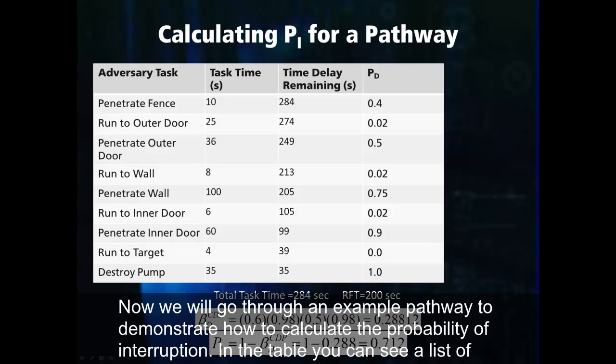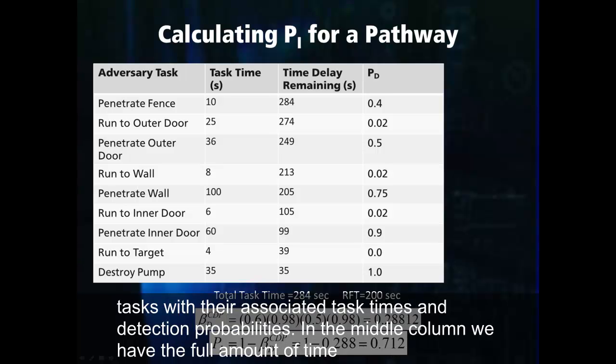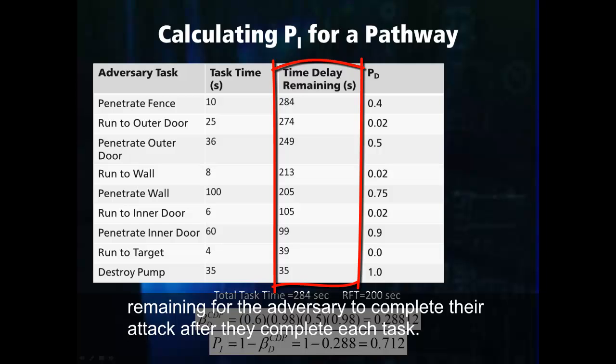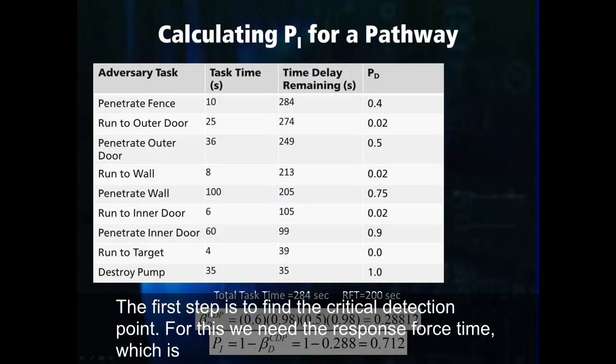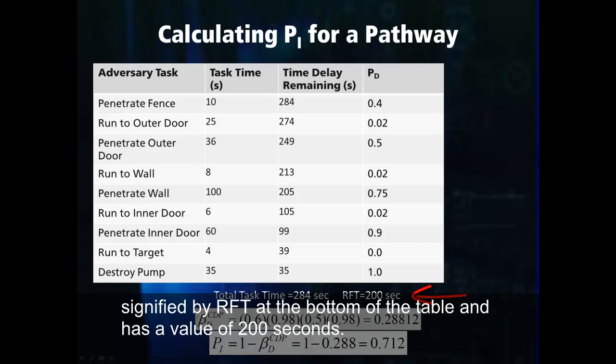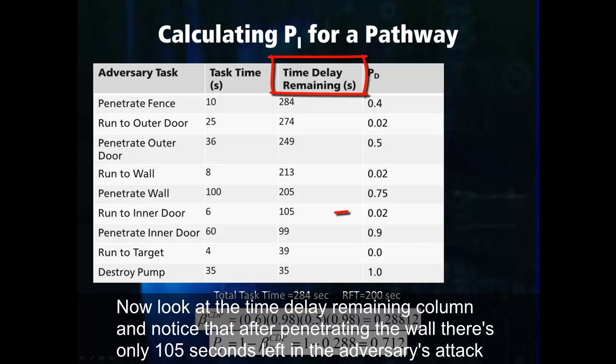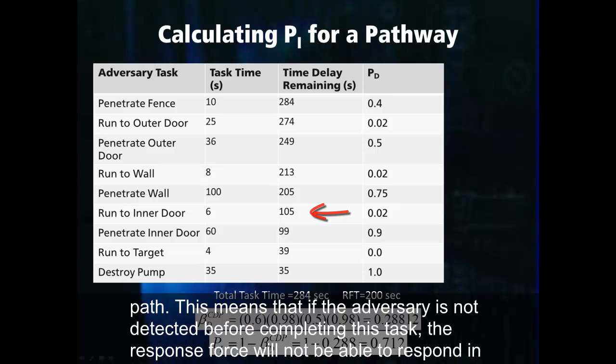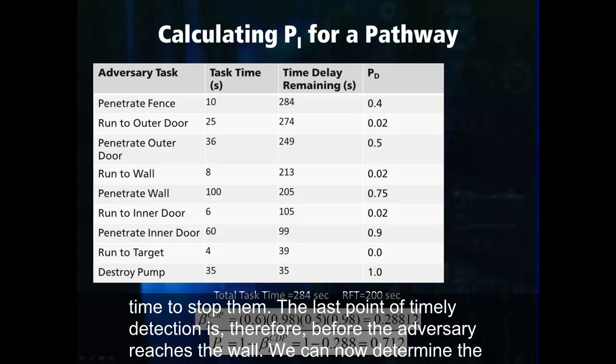Now we will go through an example pathway to demonstrate how to calculate the probability of interruption. In the table, you can see a list of tasks with their associated task times and detection probabilities. In the middle column, we have the total amount of time remaining for the adversary to complete their attack after they complete each task. The first step is to find the critical detection point. For this, we need the response force time, which is signified by RFT at the bottom of the table and has a value of 200 seconds. Now look at the time delay remaining column and notice that after penetrating the wall, there is only 105 seconds left in the adversary's attack path. This means that if the adversary is not detected before completing this task, the response force will not be able to respond in time to stop them. The last point of timely detection is therefore before the adversary reaches the wall.